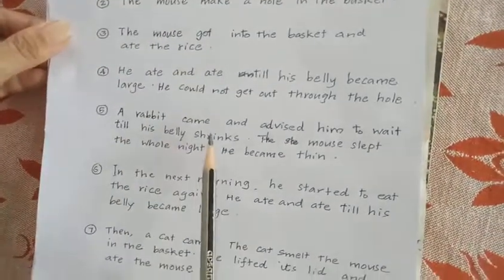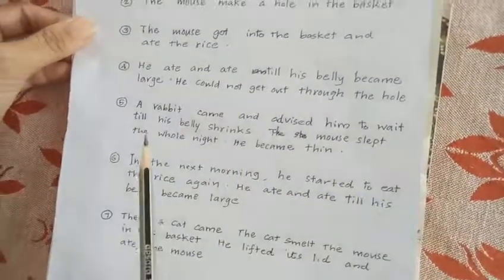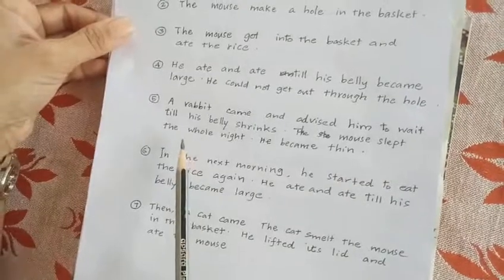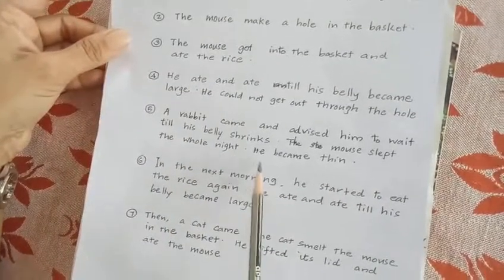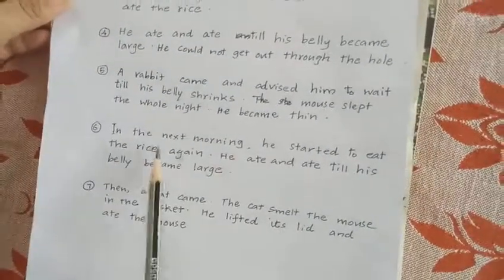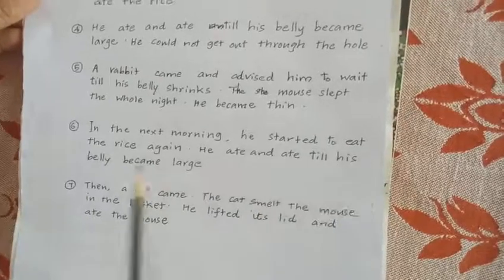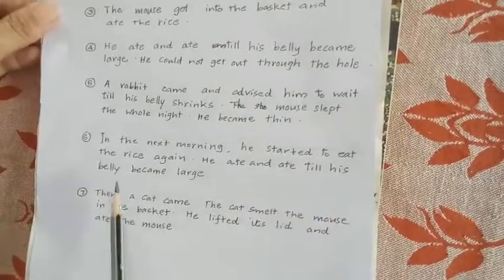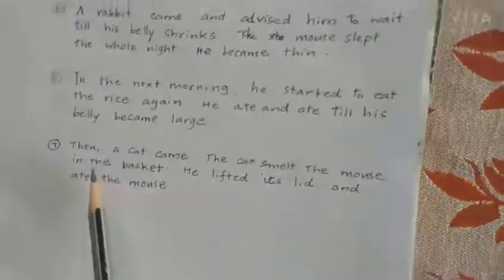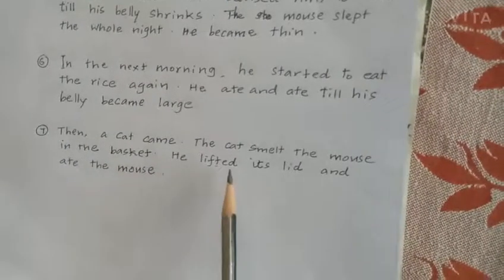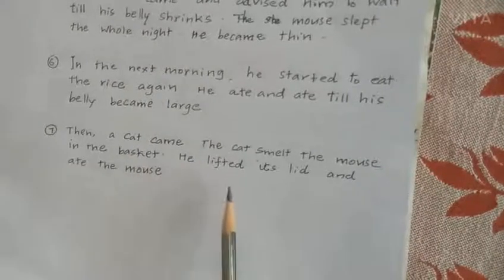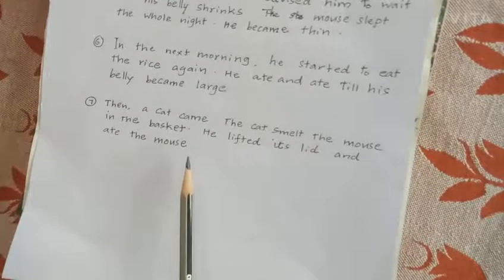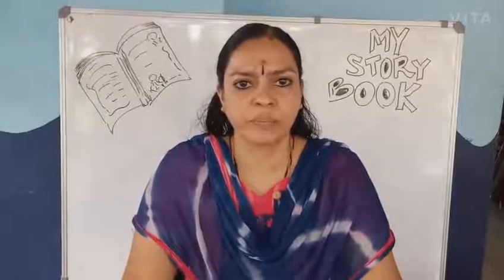A rabbit came and advised him to wait till his belly shrinks. The mouse slept the whole night and became thin. In the next morning, he started to eat the rice again. He ate and ate till his belly became large. Then a cat came, smelt the mouse in the basket, lifted its lid, and ate the mouse.